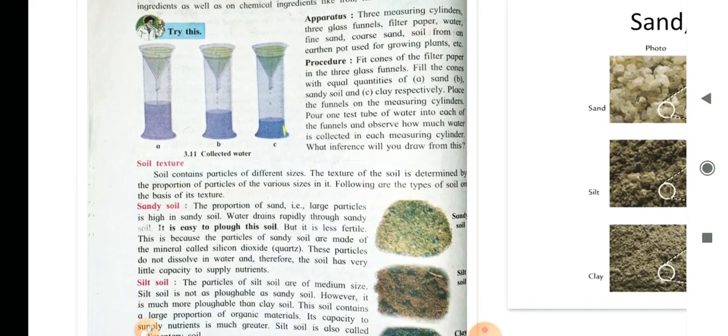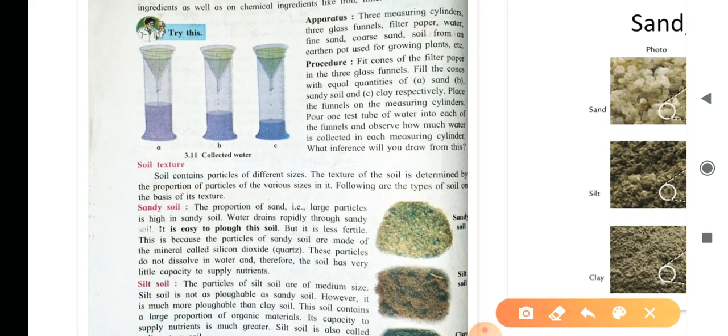Now, let us try this apparatus. Three measuring cylinders, three glass funnels, filter paper, water, fine sand, coarse sand, soil from an earthen pot used for growing plants etc. Procedure.